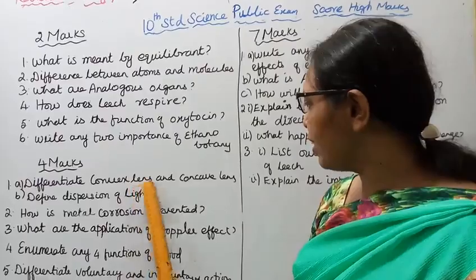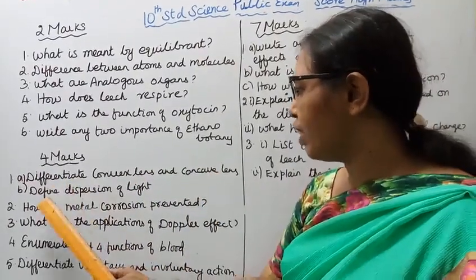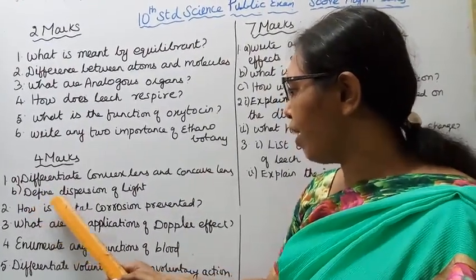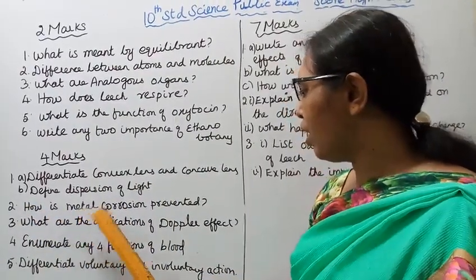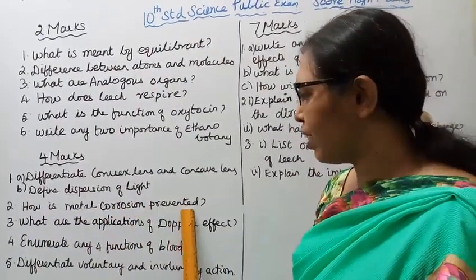Differentiate convex lens and concave lens. Define dispersion of light. Second, how is metal corrosion prevented?